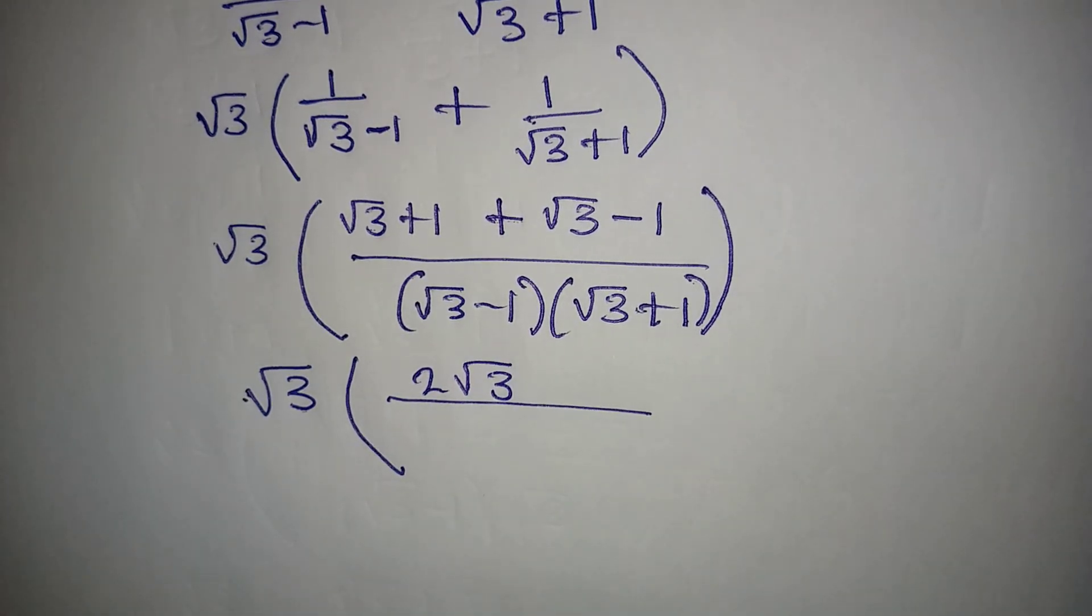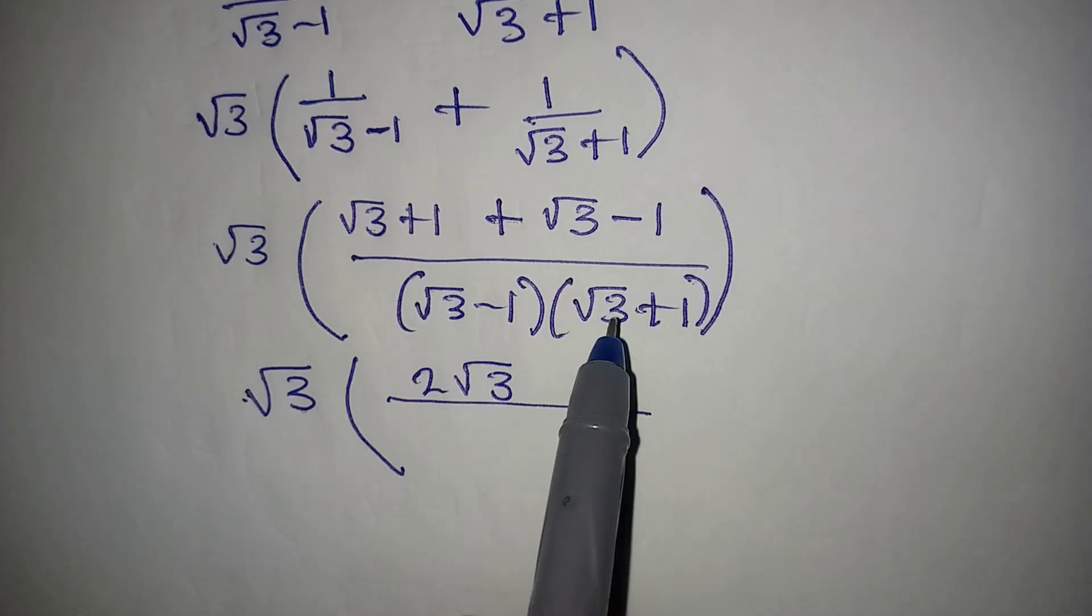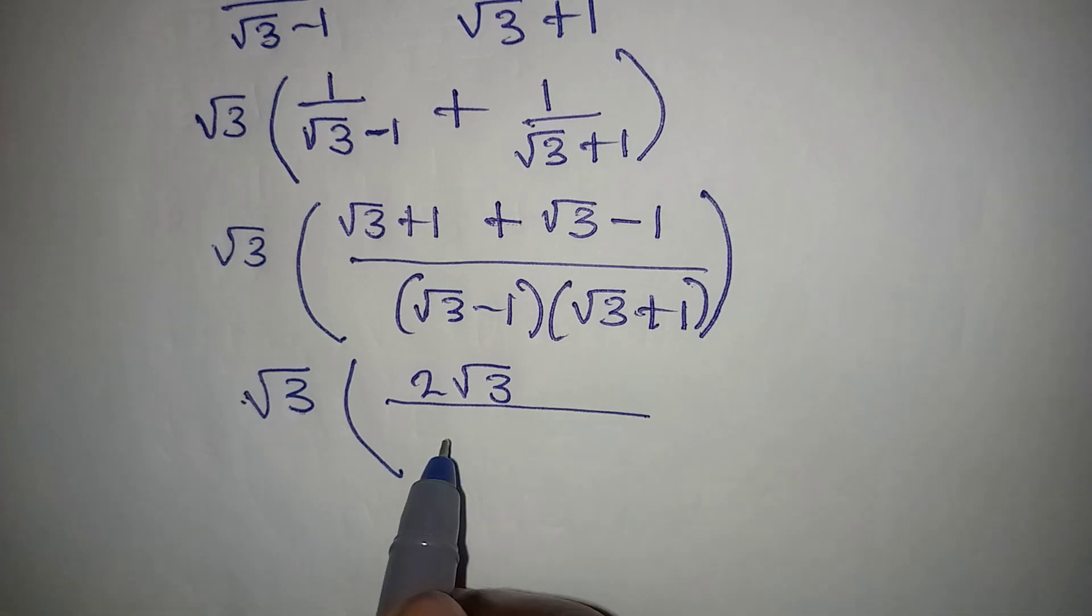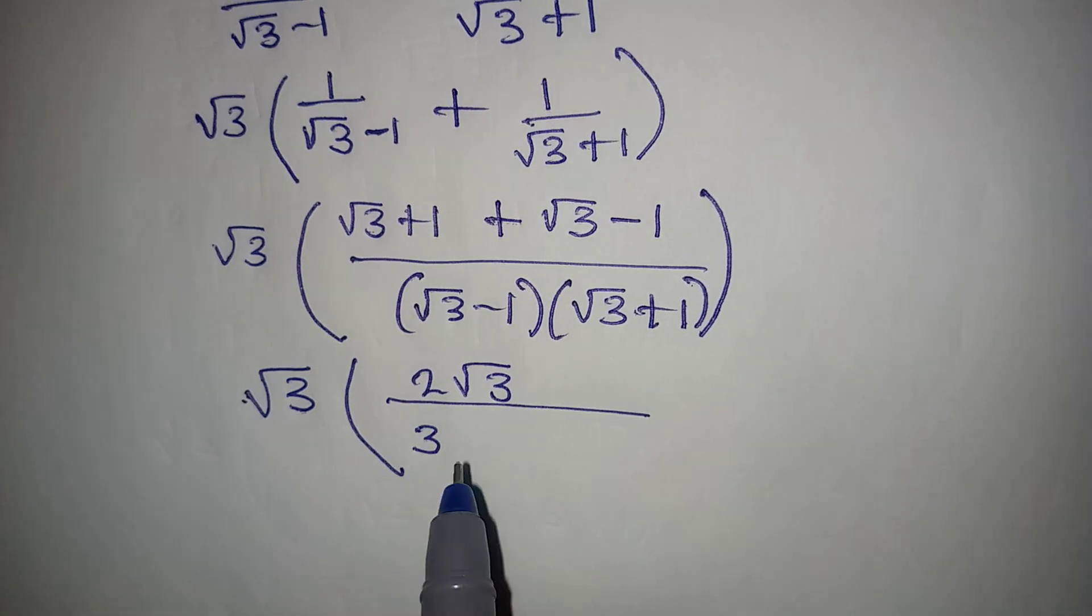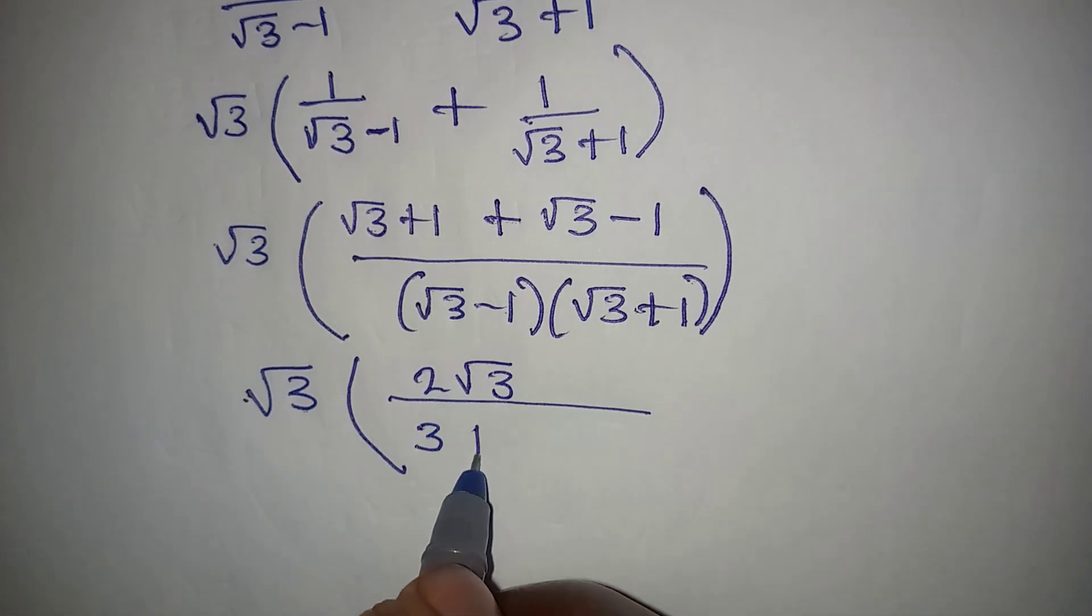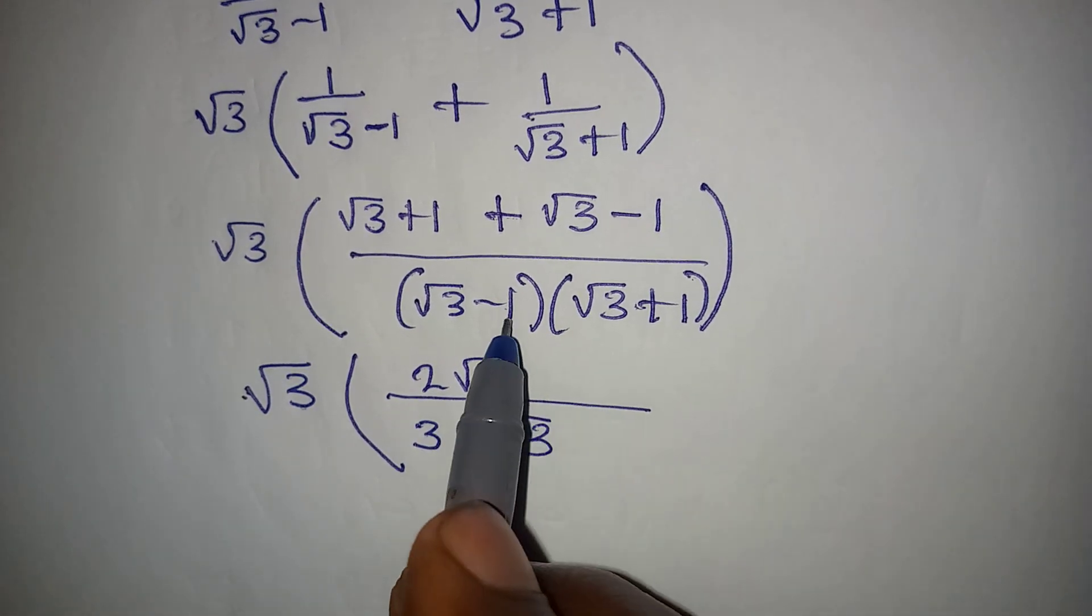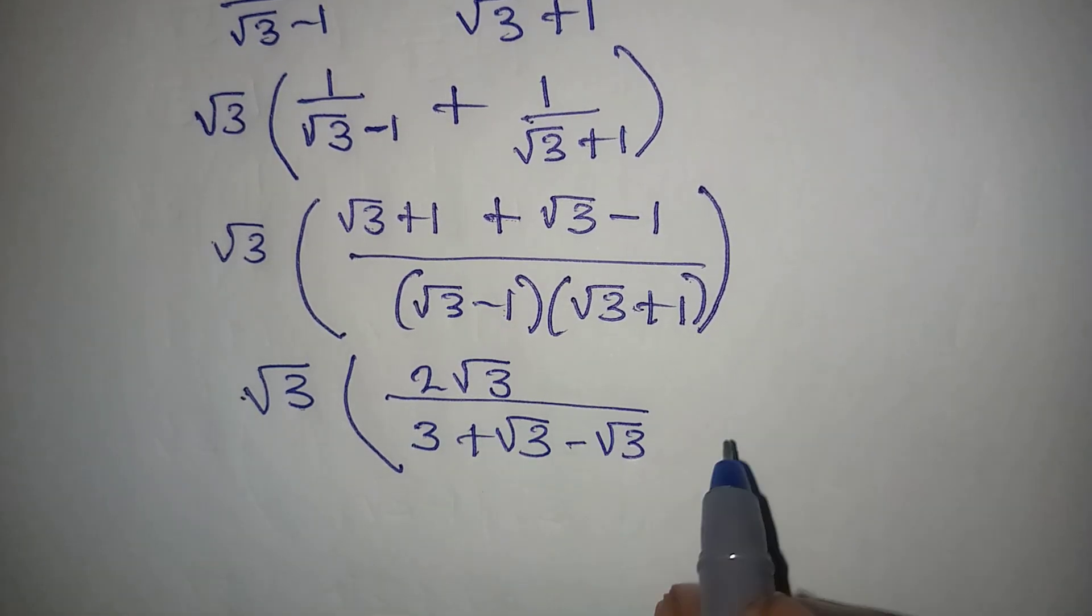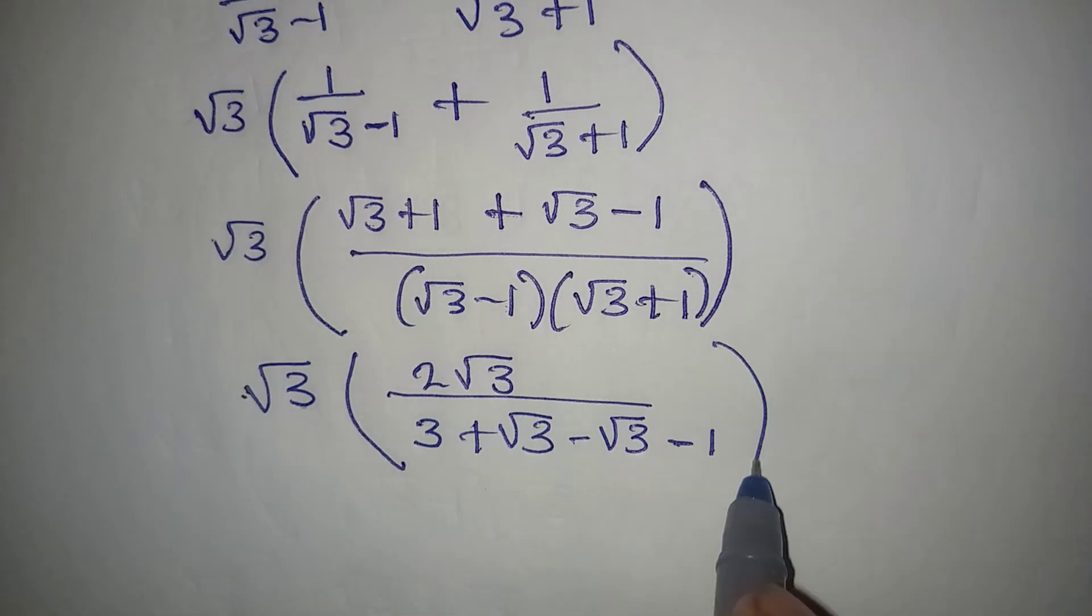But do you know that this is multiplication? We can multiply this. Root 3 times root 3 is root 9 and square root of 9 is 3. Then this times this will give us plus root 3, then this times this will give minus root 3, and this times this will give minus 1.